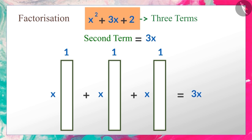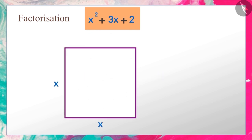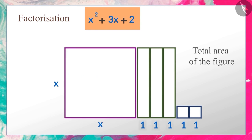We can represent the third term in the form of these two small squares whose total area is 2. In this way, when the area of all shapes is added, the total area of the new figure obtained will be x squared plus 3x plus 2.